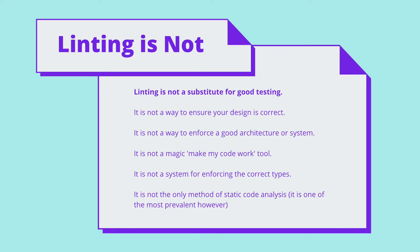That said, linting is not a substitute for a good testing framework. It can only pick up on errors related to the language — it can't tell what you're trying to achieve, and it can't detect runtime errors. Linting isn't a way to enforce good system design or architecture, and it's not a magic bullet that makes your code work. On its own, it can't even detect errors where you're providing incorrect types, for example a number instead of a string to a function. It's also not the only method of statically analyzing code, although it is the most common.